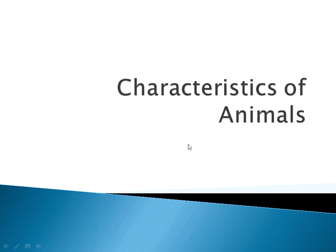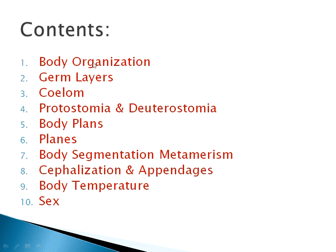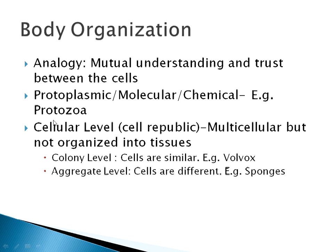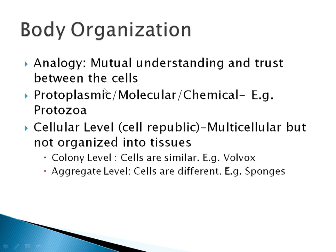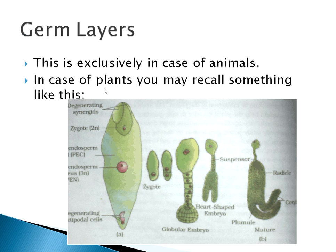Hello everyone. In the previous video we discussed about body organization — the cellular level and protoplasmic level of organization. In this video we are going to discuss about the germ layers. Germ layers are something found exclusively in animals, because germ layers appear as a zygote develops into an embryo, then into a fetus, and then into an organism — it is an intermediate stage.